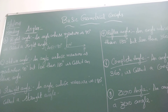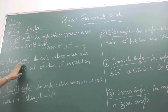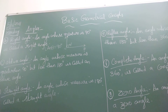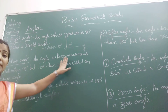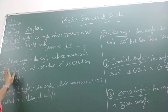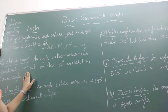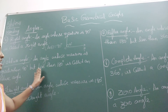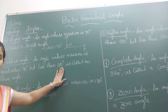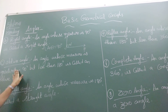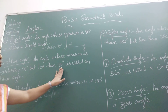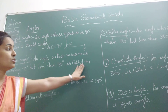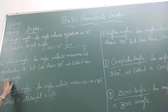Now coming to the next type of angle — that is an obtuse angle. What do you mean by an obtuse angle? An angle whose measure is greater than 90 degrees but less than 180 degrees is called an obtuse angle.